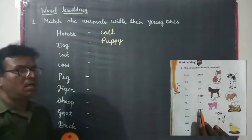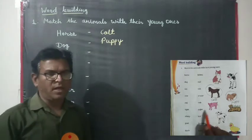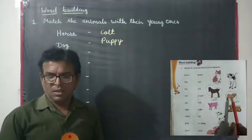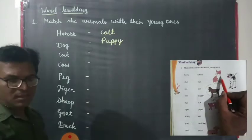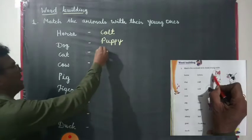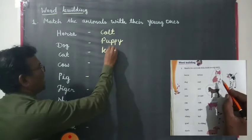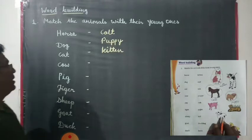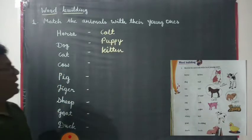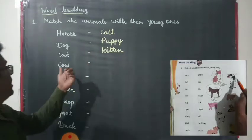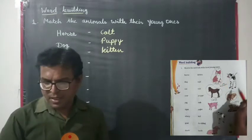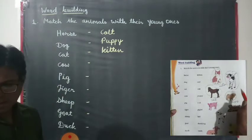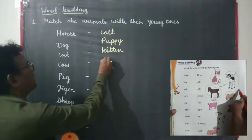Now, what is called the young word of cat? We find out the pictures of the young word of cat. Yes, this is called the young word of cat, and the name is kitten — K-I-double-T-E-N. Now, fourth, what is called the young word of cow? Yes, this is the young word of cow, that is called a calf.